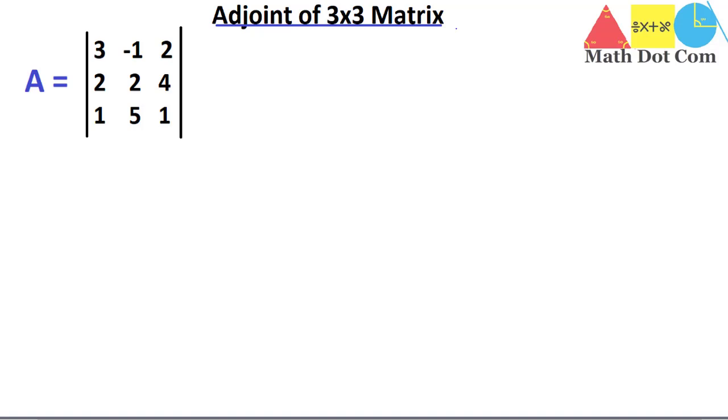There will be two steps used to find the adjoint of a 3×3 matrix. Step number one is: find the cofactors.